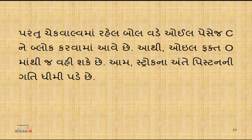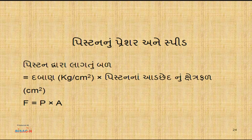ચેક વાલ્વમાં રહેલ બોલ વડે ઓઈલ પૅસેજ C ને બ્લોક કરવામાં આવે છે. આ C અને O બંને ઓપનિંગ છે, પરંતુ C ને બ્લોક કરવામાં આવે છે. આથી ઓઈલ ફક્ત O માંથી જ વહી શકે છે. આમ સ્ટ્રોકના અંતે પિસ્ટનની ગતિ ધીમી પડે છે.